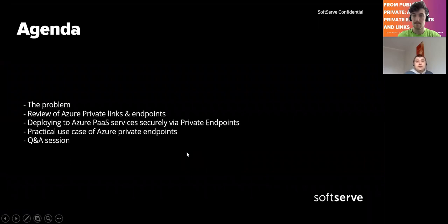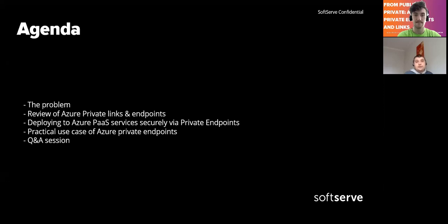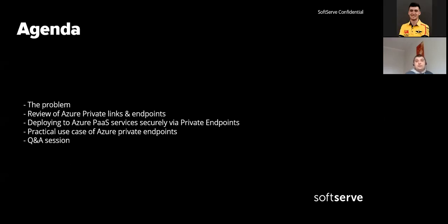Here is our today's agenda. Firstly, we'll discuss problems related to cloud PaaS services and why it's important to overcome them. Secondly, we'll review Azure Private Endpoints and Links, and talk about additional infrastructure changes needed for implementing them correctly. Thirdly, we'll discuss how to deploy to Azure PaaS services which have private endpoints, then review a use case implemented on one of my previous projects at a customer site. In the end, I plan to devote some time to a Q&A session.